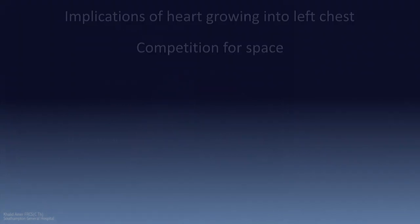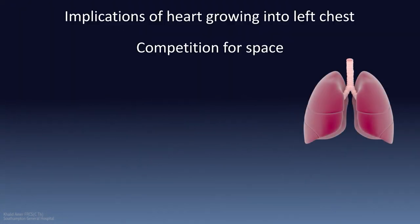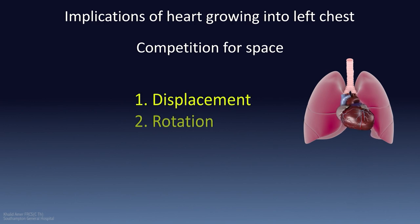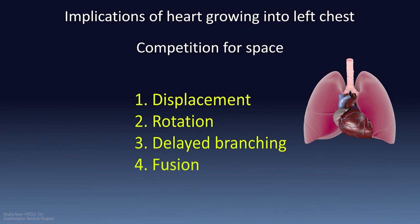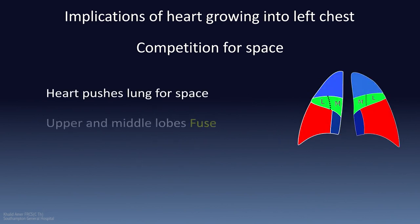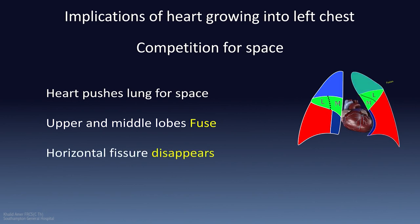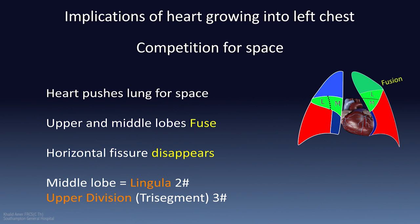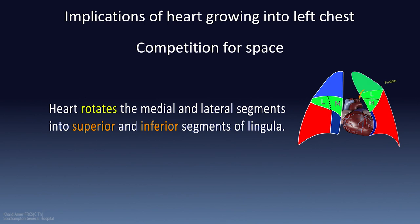The heart descends with the diaphragm and pericardium as it develops, moving towards the left chest and competing for space with the left lung. As a result, the lung adjusts through displacement, rotation, delayed bronchial branching, and lobal fusion. Squeezing the left lung results in fusion of the middle lobe and upper lobes into one lobe — the upper lobe. The fissure between them disappears but the total number of five segments is preserved. The middle lobe is now known as the lingula with two segments, and the upper lobe is now the upper division or trisegment with three segments.